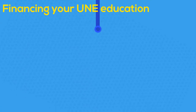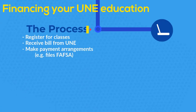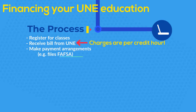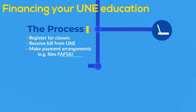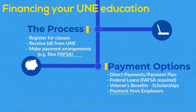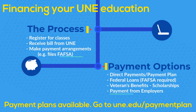The process is fairly simple. Register for A and/or B terms. UNE will send a bill for tuition and fees. Then you'll need to make payment arrangements either through direct payment, a payment plan, or by filing for financial aid. If you are paying with veterans benefits or third party payments, please contact us.